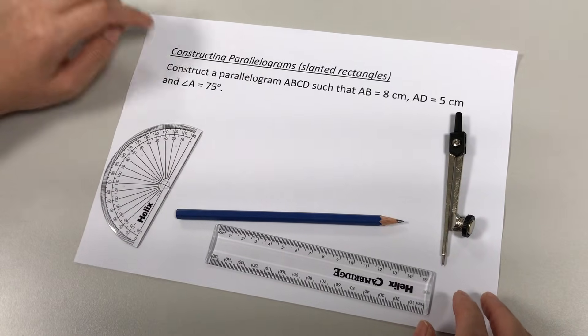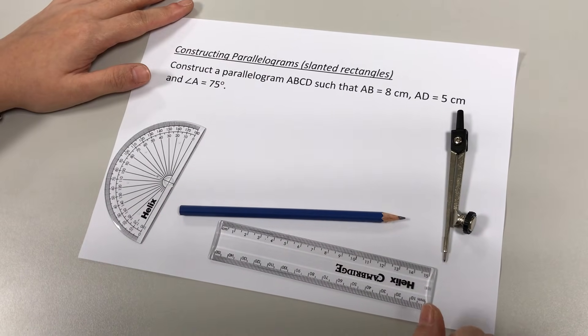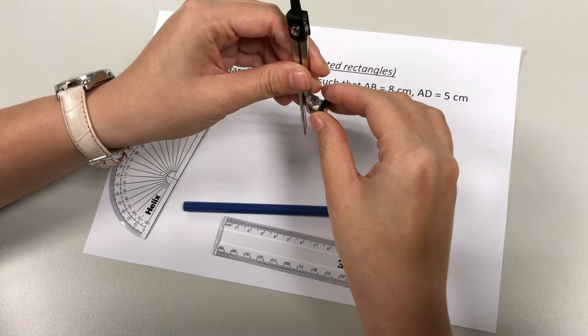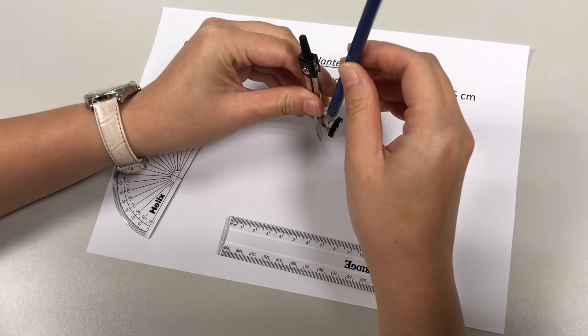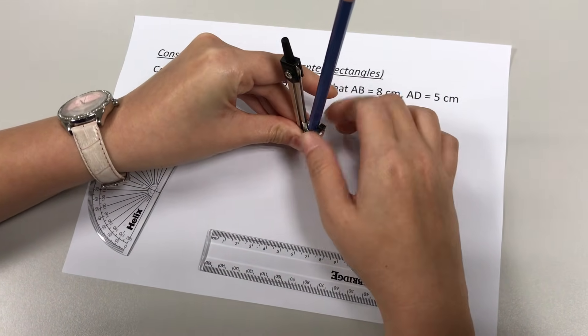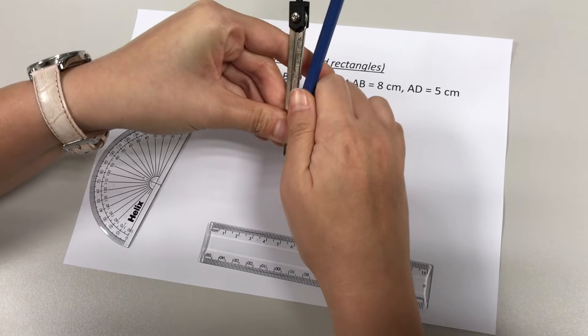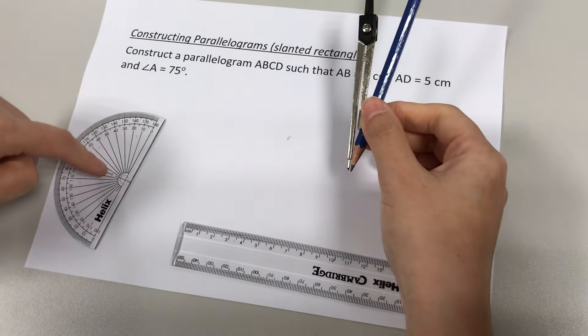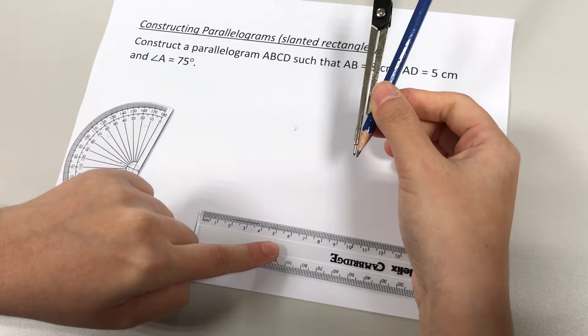Before we start, please make sure you have all the equipment that you need. Get your compass ready by placing the pencil through the hole and screwing the knot tight. So we would need the protractor, the compass, as well as a ruler.